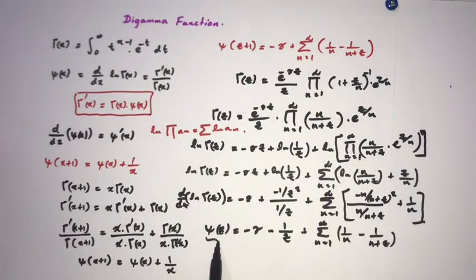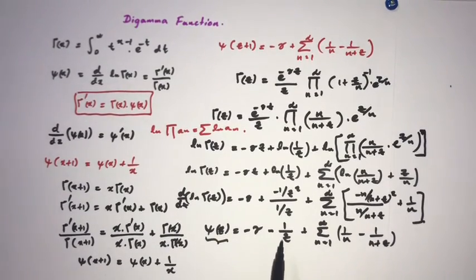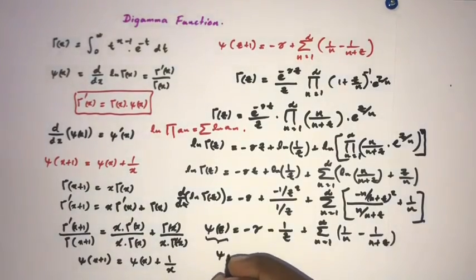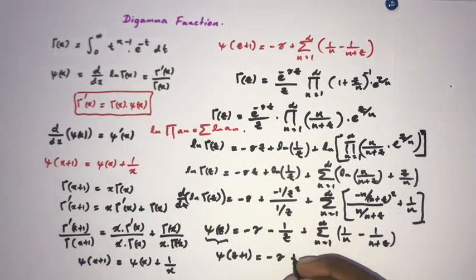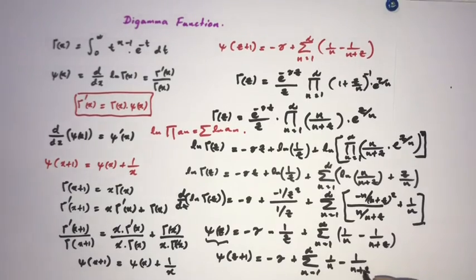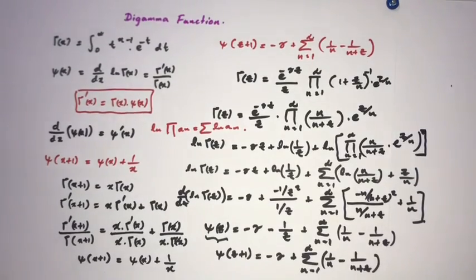So we have ψ(c) = −γ − 1/c + sum from n=1 to infinity of (1/n − 1/(n+c)). Moving the −1/c to the left side gives ψ(c) + 1/c = −γ + sum of (1/n − 1/(n+c)), which by the recurrence identity means ψ(c+1) = −γ + sum from n=1 to infinity of (1/n − 1/(n+c)). This completes the proof of the series representation of the digamma function.